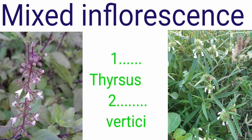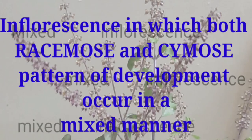Mixed inflorescence contains two types of inflorescence, that is tyrosis and verticillaster. The inflorescence which contains both the pattern of racimos and cymos in developing the single individual inflorescence is said to be a mixed inflorescence.